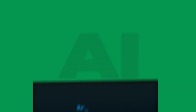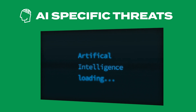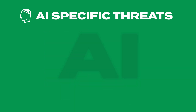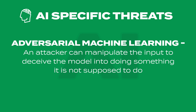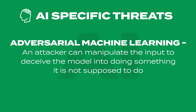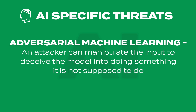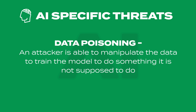It starts with first familiarizing ourselves with the AI-specific threats. This can include a lot of different types of things, starting with adversarial machine learning — where attackers can subtly manipulate the input to deceive the model into doing something it's not supposed to — or maybe data poisoning, where an attacker has been able to maliciously manipulate the training data to make the model behave incorrectly.